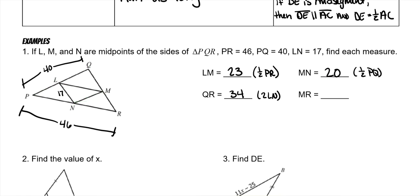MR is going to be half of QR, because remember these are mid-segments, which means both of these are congruent. So it's half of QR, which we found QR to be 34. Half of that is 17. So MR is going to be the same as LN.